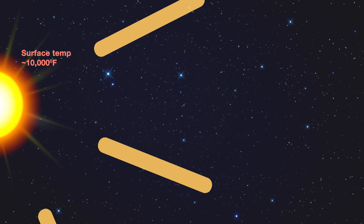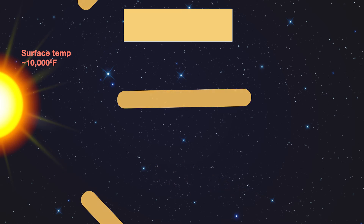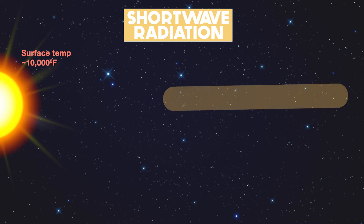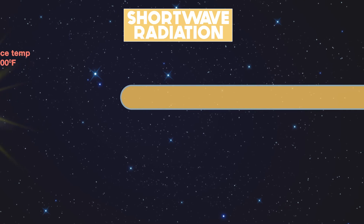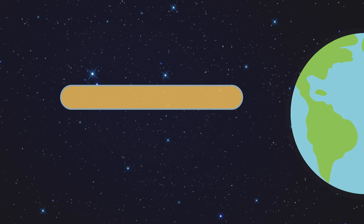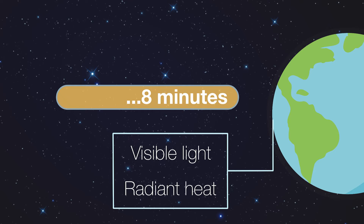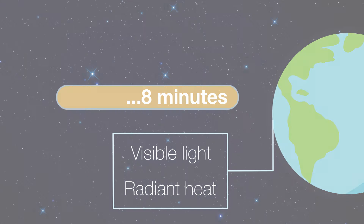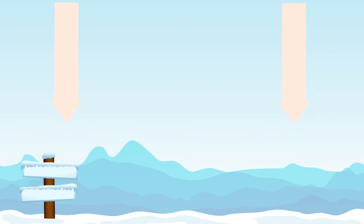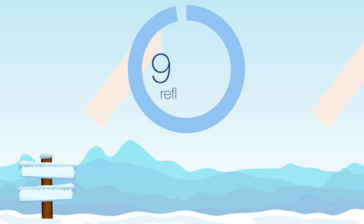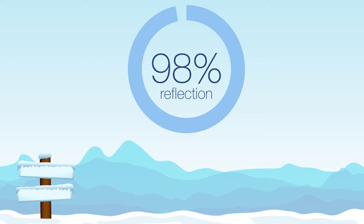Energy from the sun is emitted as shortwave radiation due to its high temperature. It takes just over eight minutes for this energy to reach the Earth, and we experience this as a combination of visible light and radiant heat. First, let's think about the Earth's energy balance if there were no atmosphere. Bright surfaces like snow, ice and desert sands reflect almost all the incoming solar radiation back into space.